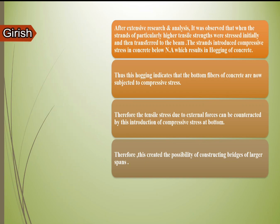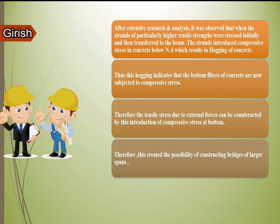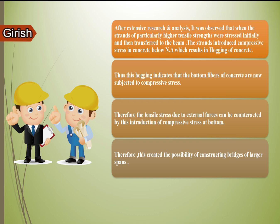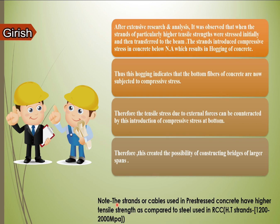After extensive research and analysis, it was observed that when strands of particularly higher tensile strength were stressed initially and then transferred to the beam, the strands introduced compressive stresses in concrete below the neutral axis, resulting in hogging of the concrete. This hogging indicates that the bottom fibers of concrete are now subjected to compressive stresses, therefore the tensile stresses due to external forces can be counteracted, creating the possibility of constructing bridges of larger spans.